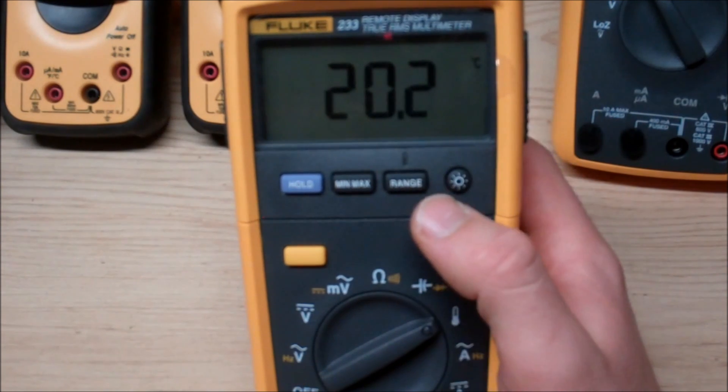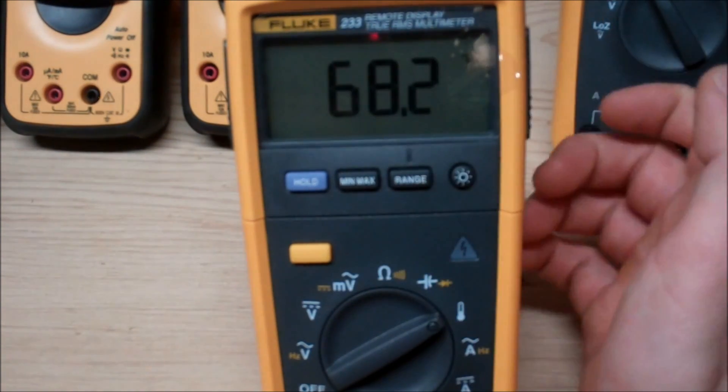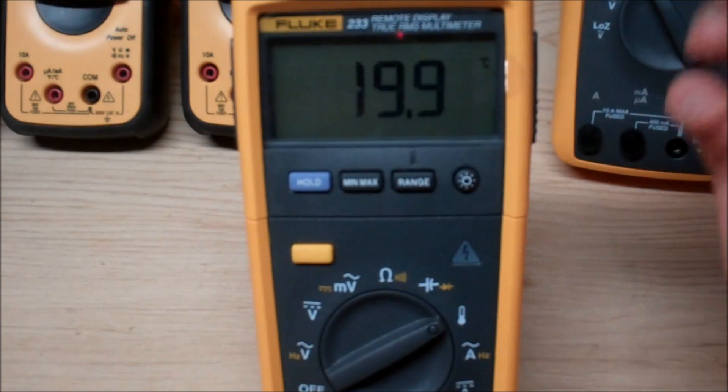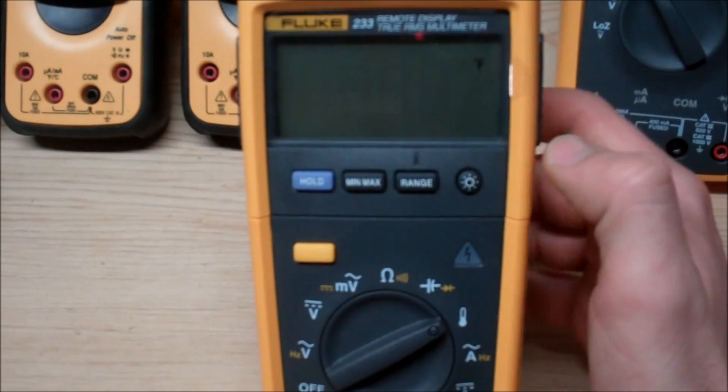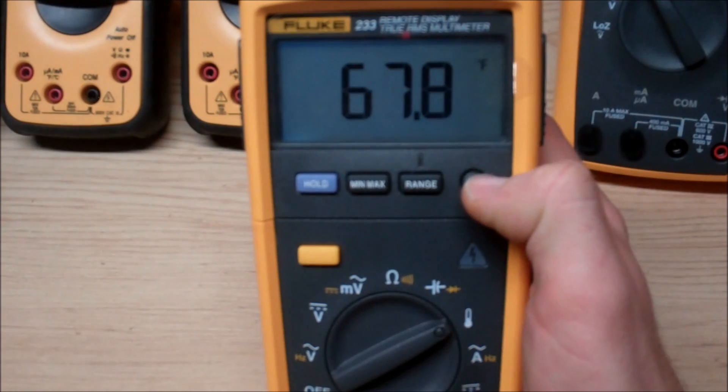Now the next interface we have here is the range and what that allows you to do is to toggle between measurements. So for example degrees Celsius and degrees Fahrenheit. And our last function that we have is the actual backlight.